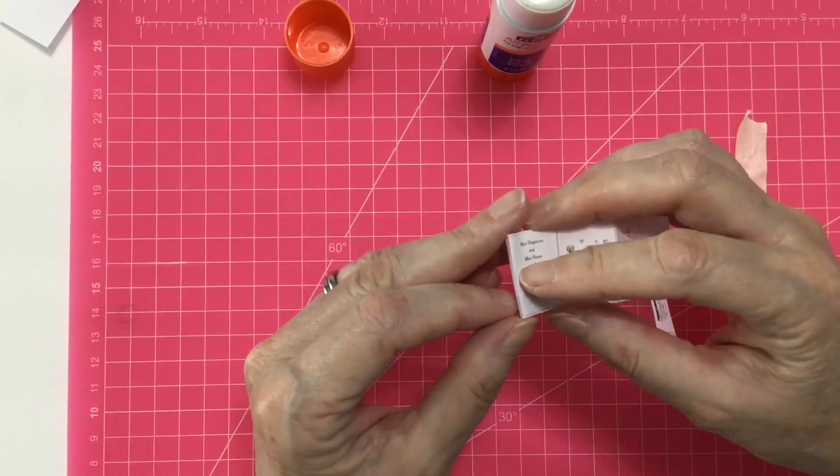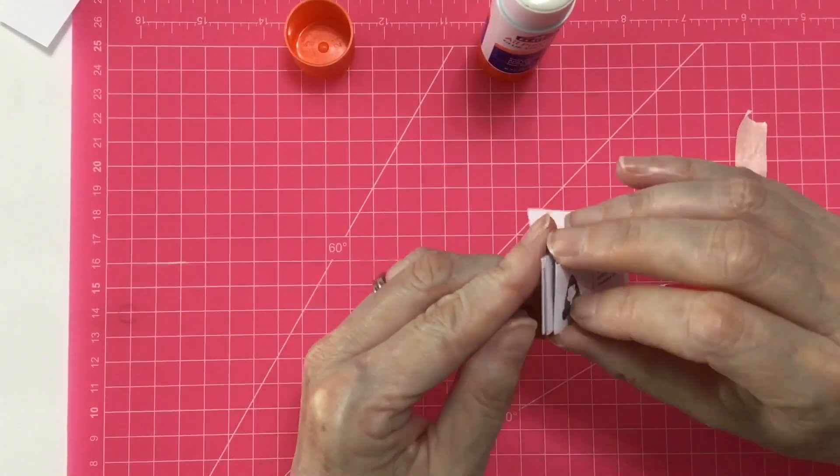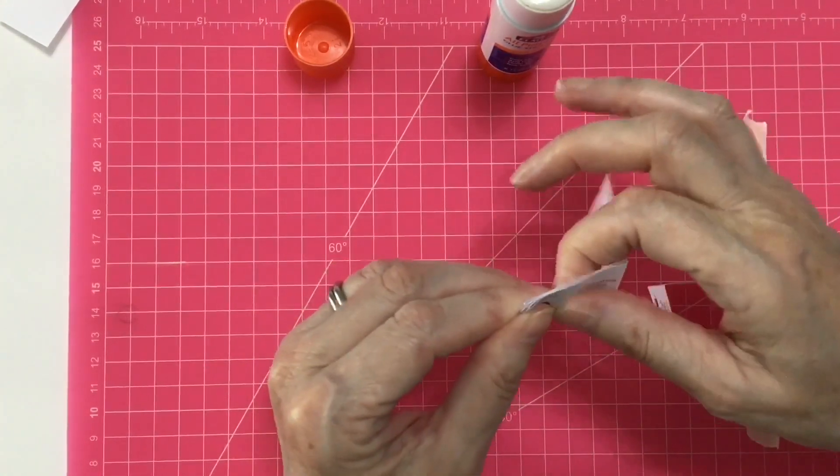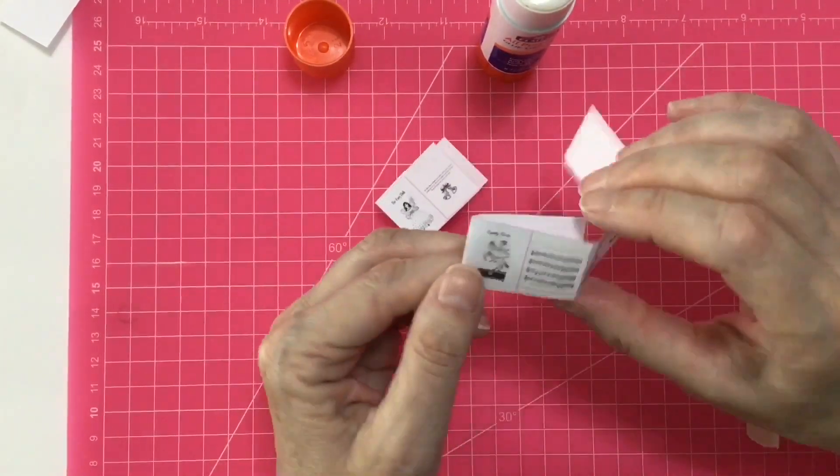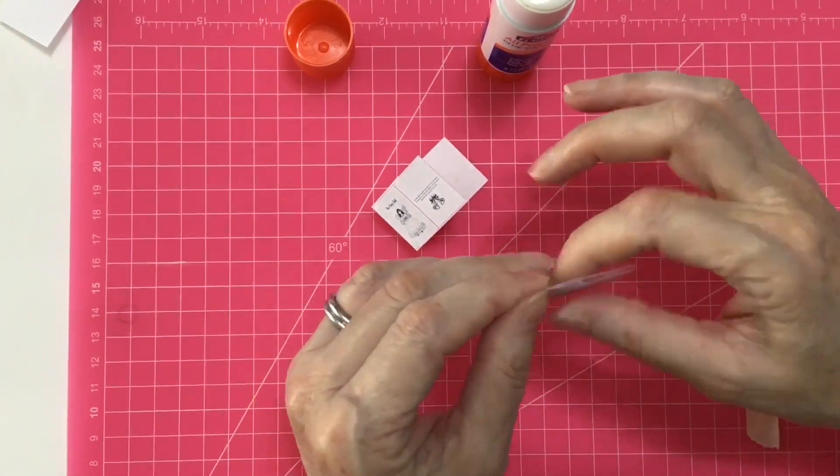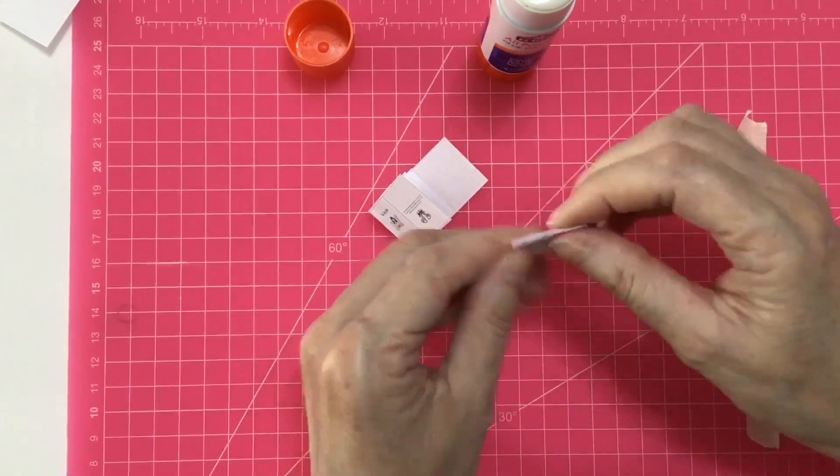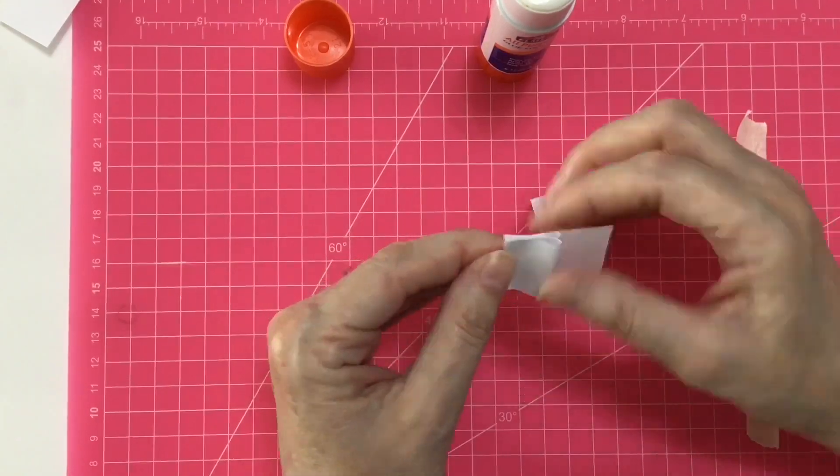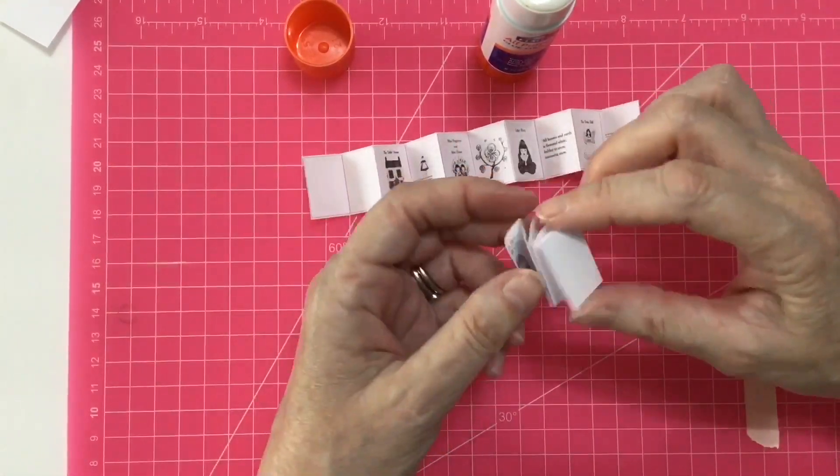So once you have your mountain folds, you want to match them up so that the front of the book is lined up and nice and tidy. Then we're going to fold in the end pages so that everything is squared away.